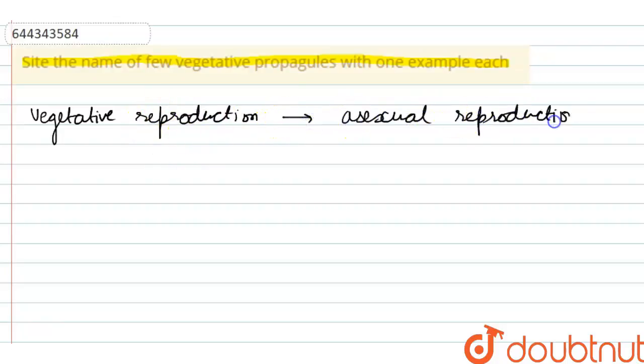Because in asexual reproduction only one parent is required. And if we talk about vegetative propagules, these are the plant part which help in the vegetative reproduction.